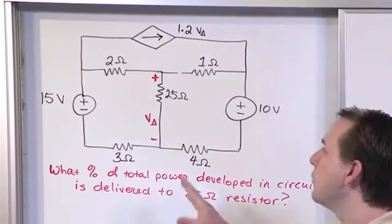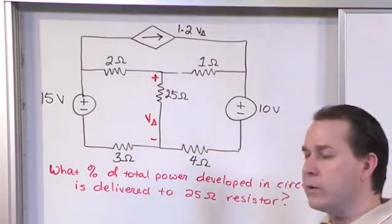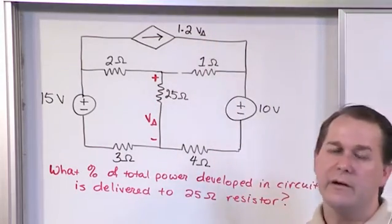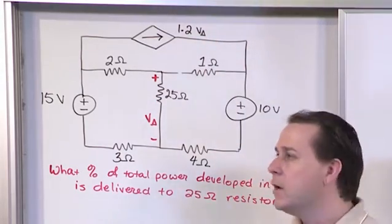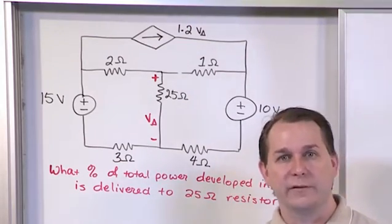What we're going to do is define our meshes. In this case, we have three meshes again. We'll define our mesh current equations. Of course, we're not going to be able to solve them straight out of the gate, because we have an extra variable here. You should kind of be used to that by now. We'll figure out the constraint equations and finally beat the system into shape for a mesh current solution.